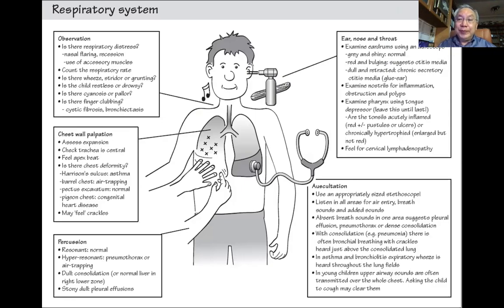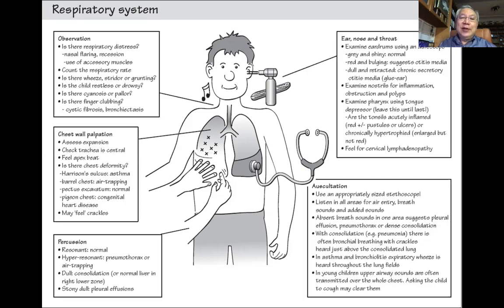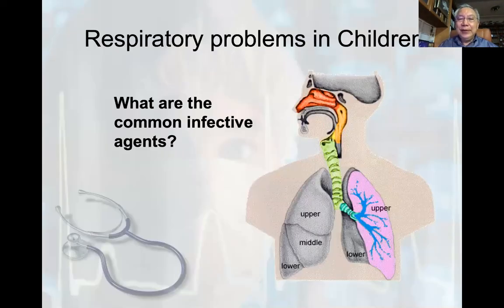Here is an outline on how to examine the respiratory system in children. Remember that children are not small adults — in paediatrics you always deal with children according to their age. For example, you may not use percussion on an adolescent the same way as on a premature infant. You must adjust the examination method to the child's age and size, starting with observation first, since once a child starts crying you cannot hear anything.